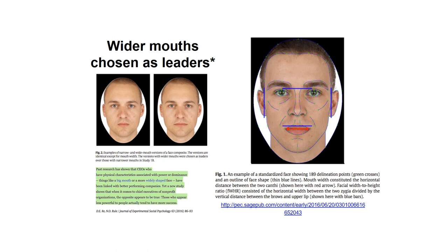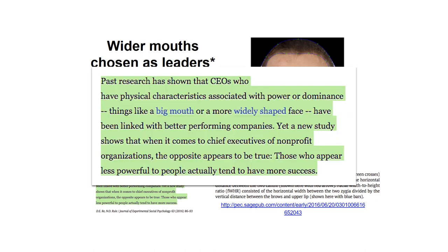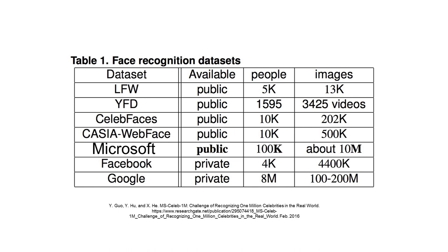This research study looked at measuring the width of a man's mouth and using that to determine his capabilities as a CEO. The paper claims that a wider mouth equates to higher performance as a CEO — unless it's for an NGO, where it's the opposite: those who appear less powerful actually tend to have more success.